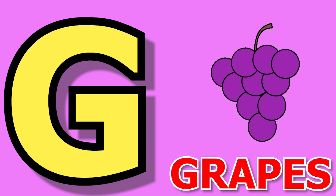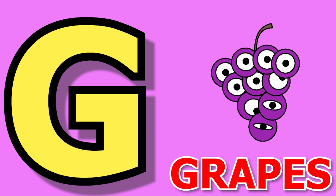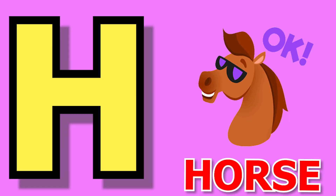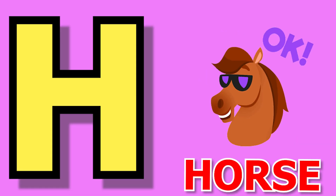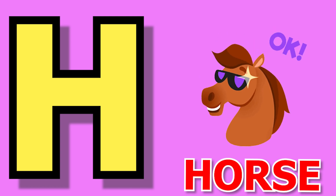G for grapes, grapes means angoor. H for horse, horse means ghoda.